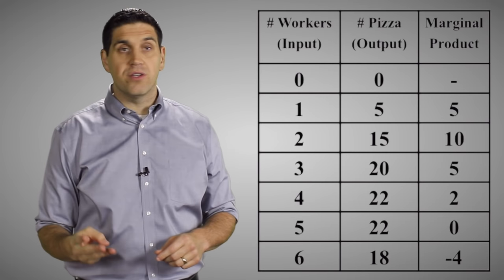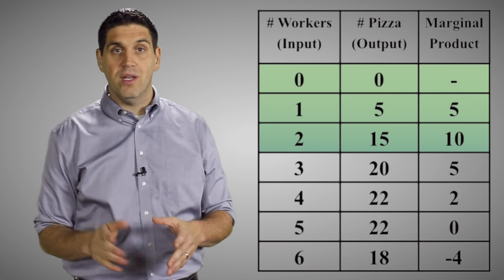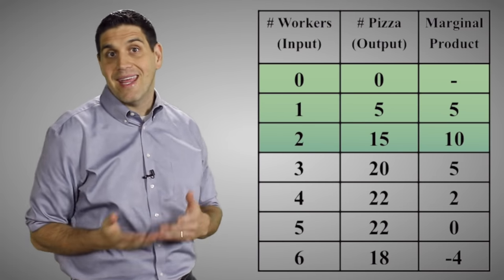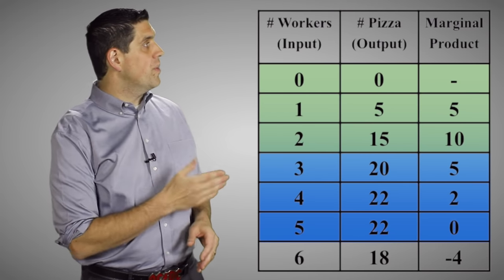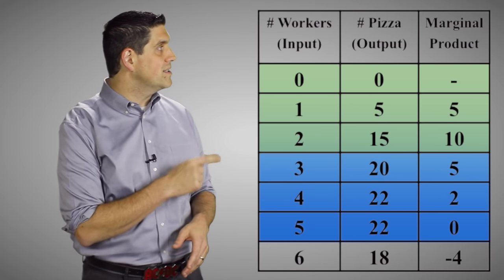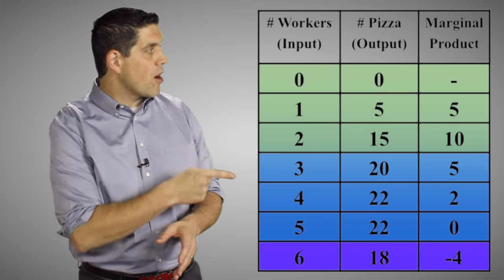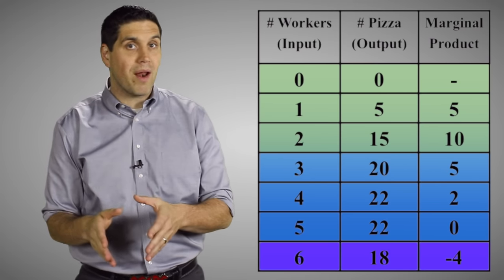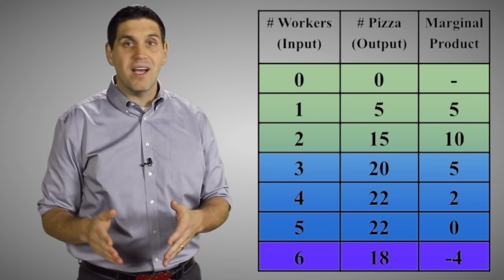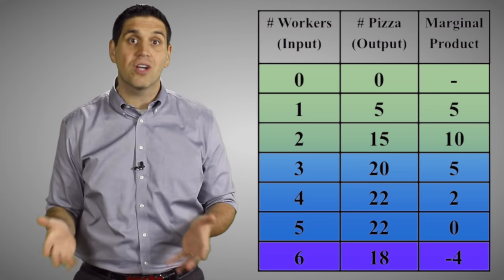Actually, there's three stages of returns. Stage one is where the marginal product is increasing because of specialization. Total product is increasing at an increasing rate. Stage two is where marginal product is falling because of fixed resources and the law of diminishing marginal returns. Total product is increasing, but at a decreasing rate. Stage three is where marginal product is negative, which means the total product is actually falling. This is because the workers are in each other's way, and they're fumbling over each other, and there's just way too many cooks in the kitchen.